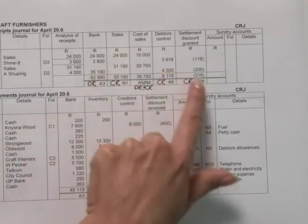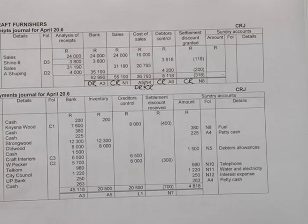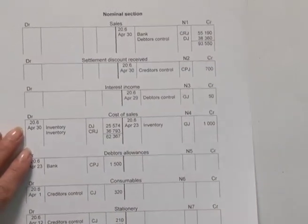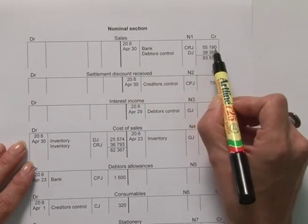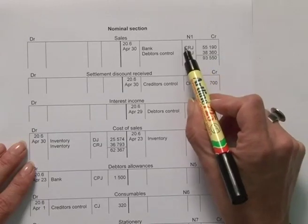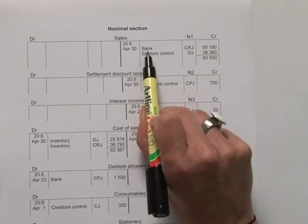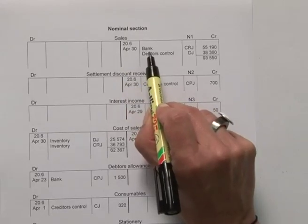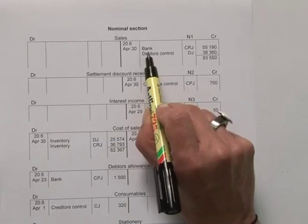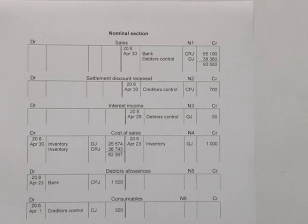For the sales account, I indicated that will be on the credit side. So on the credit side of the sales account, on the 30th of April, I include my sales column total of $55,190. I again indicate using the folio number where I got the amount from. The corresponding debit for this credit is in the bank account. Note that the details column is reserved for account names, not descriptions like in the journals — account names, or a collective term as used in the bank account. So that $55,190 represents the sales column from the cash receipts journal.